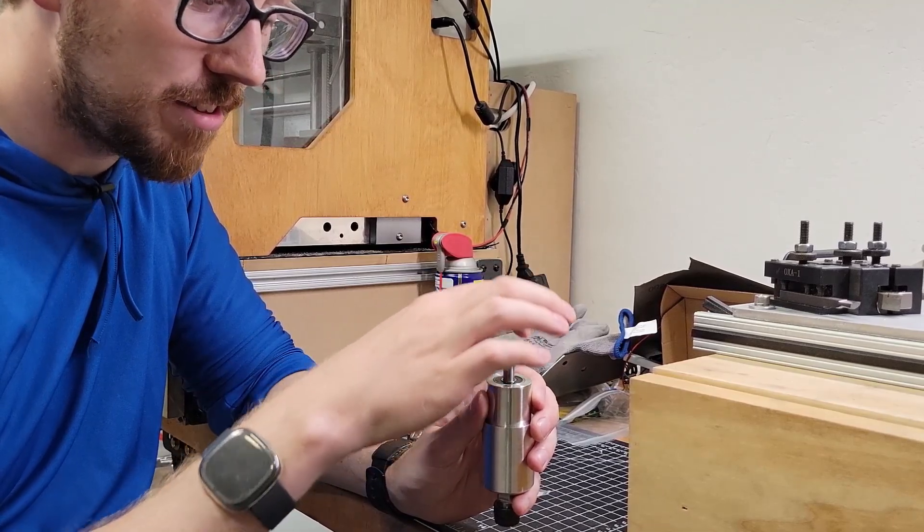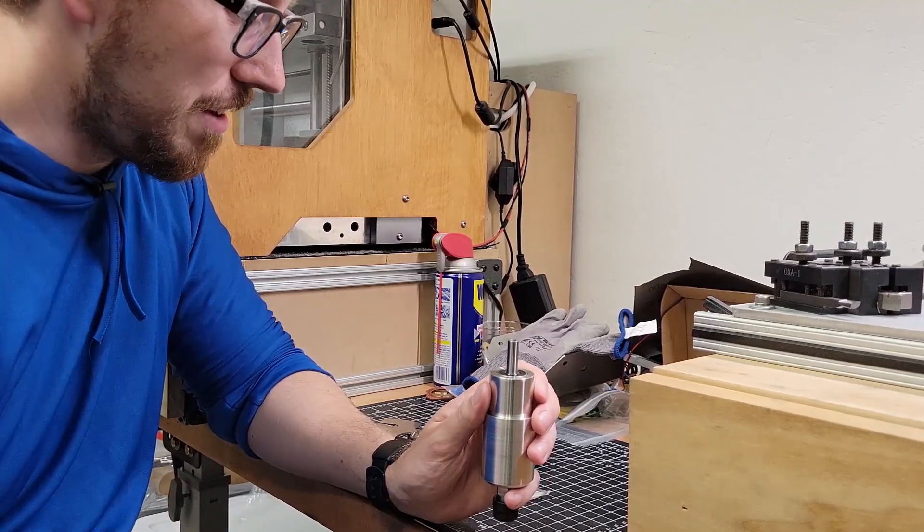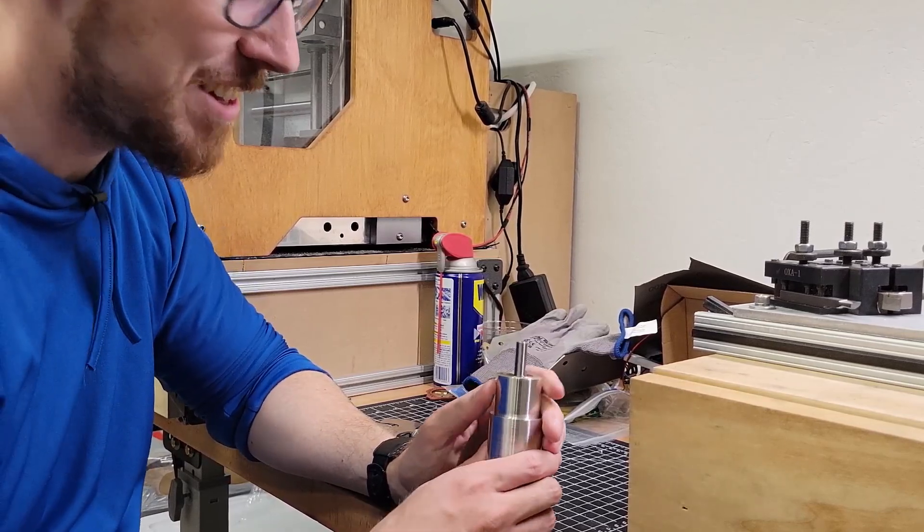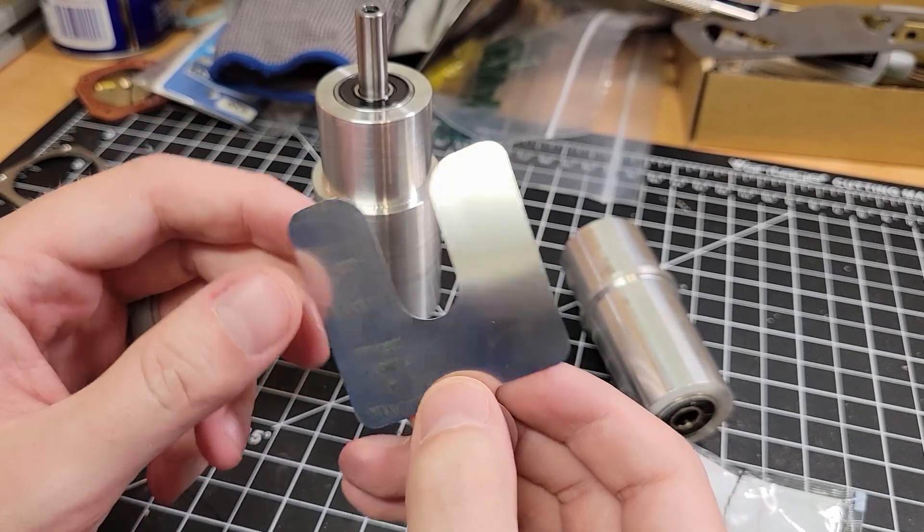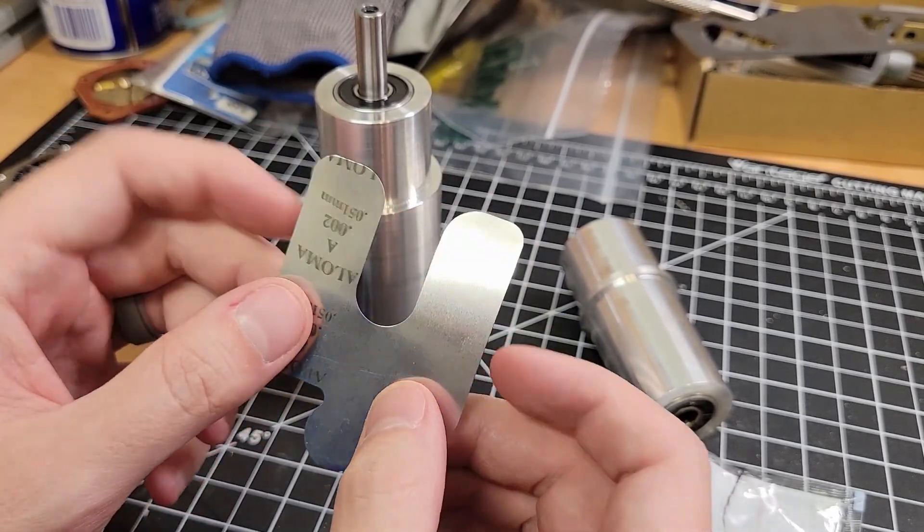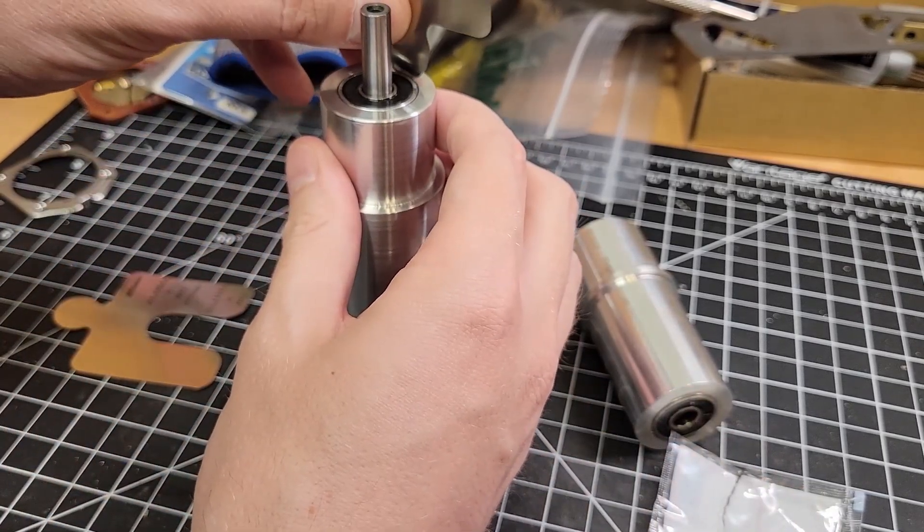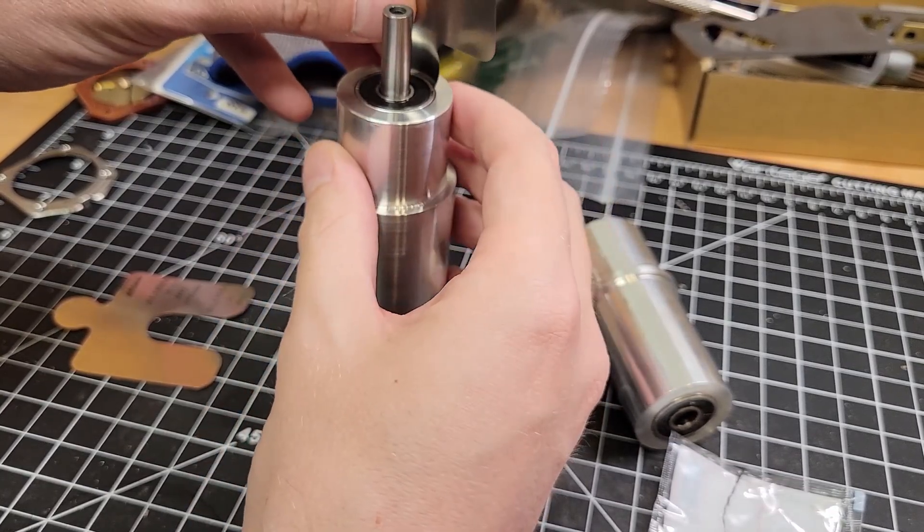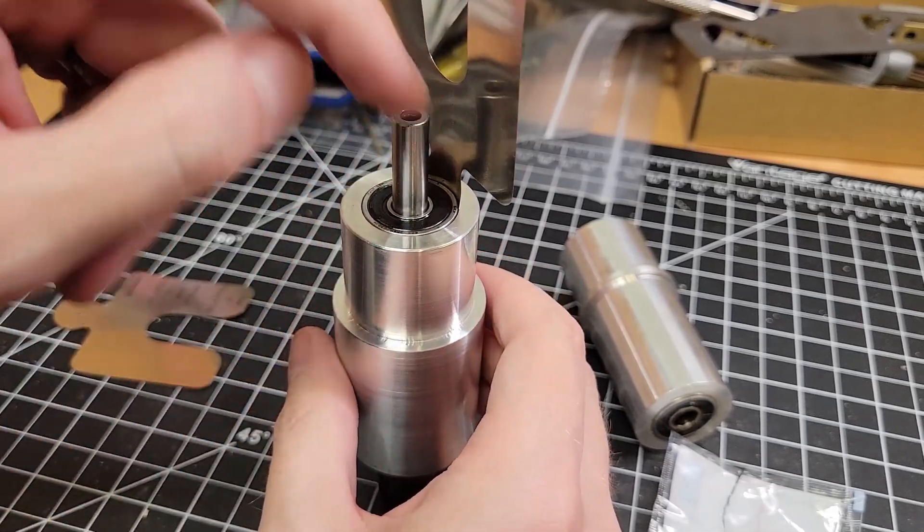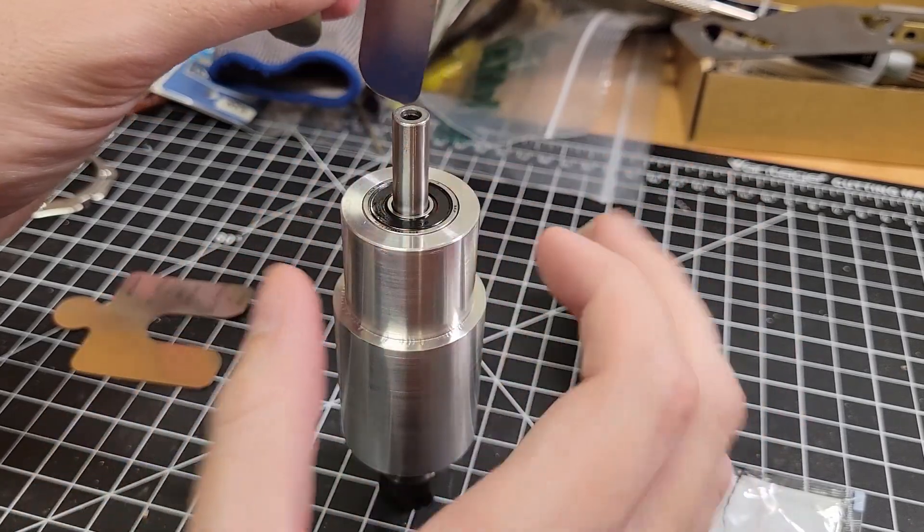Here's what a two-thousandths thick shim looks like, by the way - very thin. And I can just kind of work it into the gap there. So the idea is I can do one on each side. I'm probably going to use the thicker side just because I want more surface area around that bearing covered.